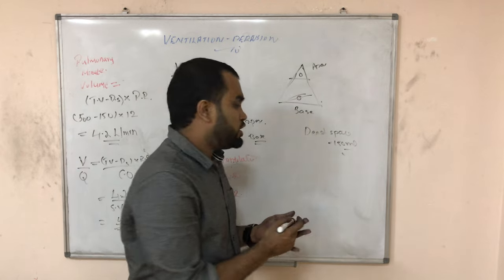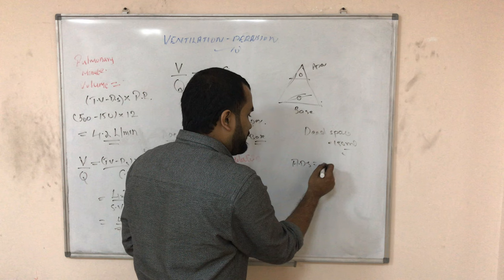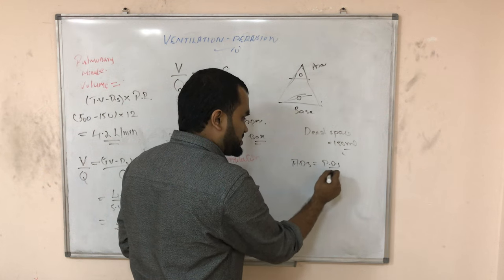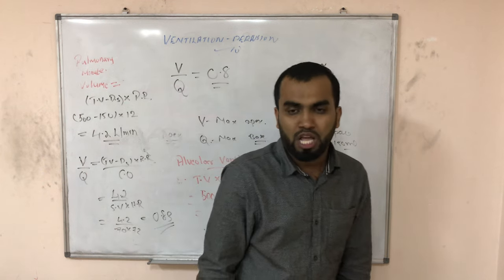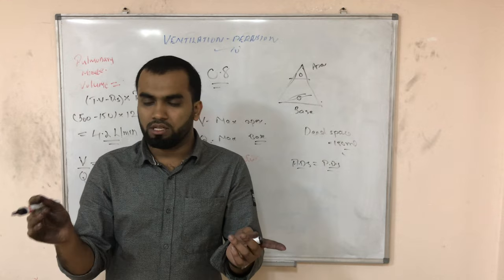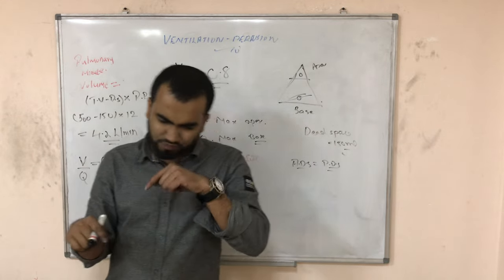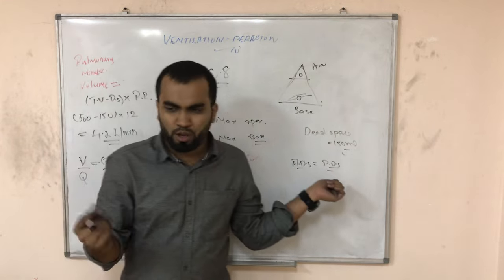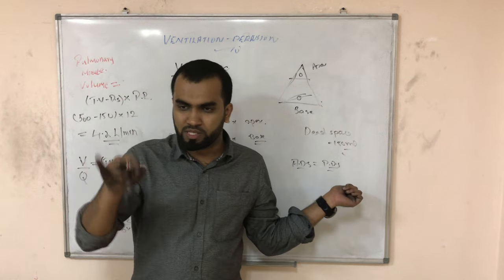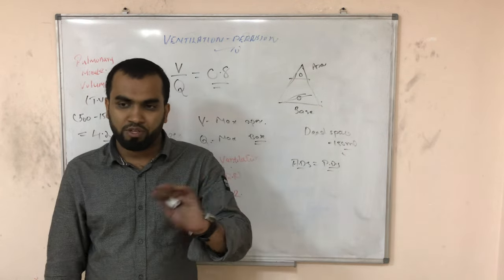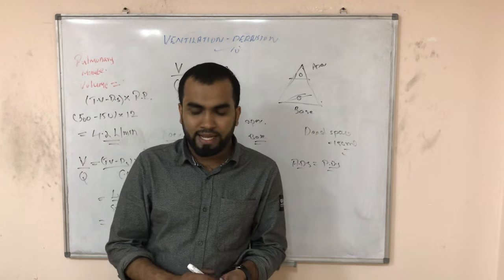Anatomical dead space is equal to physiological dead space in function. That is equal to 150 ml. If you have any clotting or any obstruction, you will have more physiological dead space which will be more than 150. You will calculate accordingly.